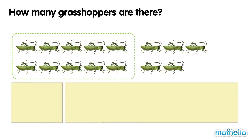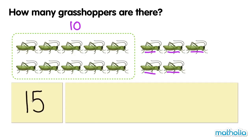How many grasshoppers are there? Ten, eleven, twelve, thirteen, fourteen, fifteen. There are fifteen grasshoppers. Fifteen.